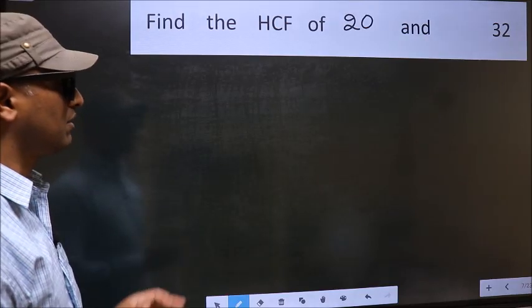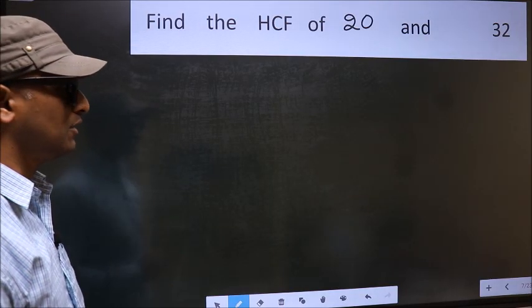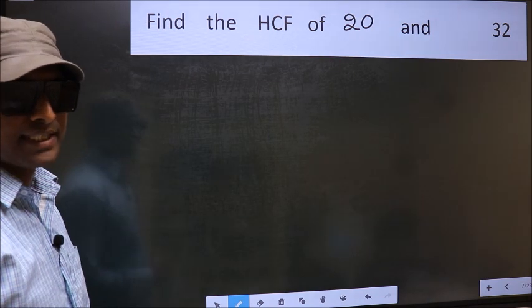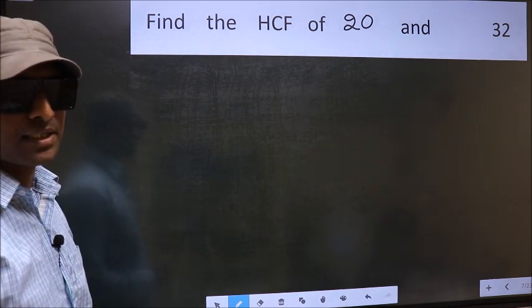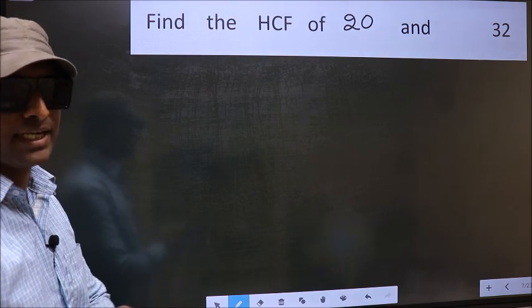Find the HCF of 20 and 32. To find the HCF, we should do the prime factorization of each number separately.